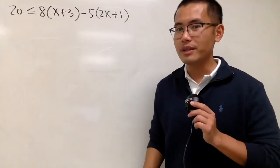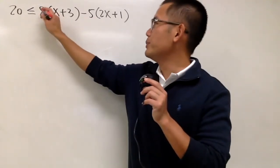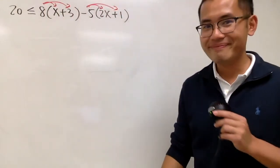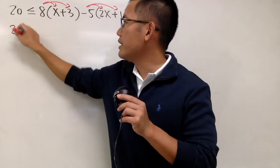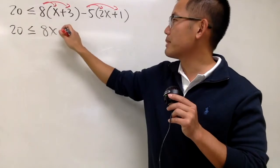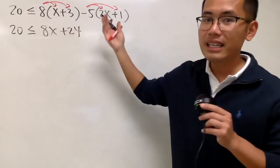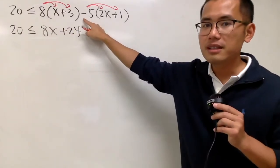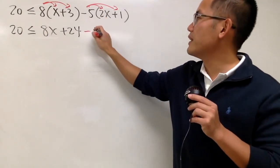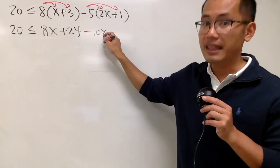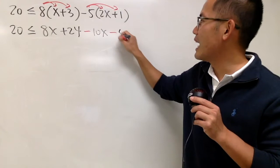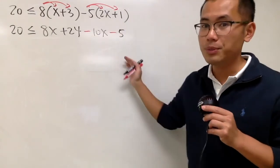To solve this inequality, we should first distribute the number in front of the parentheses. Here we have 20, and that's less than or equal to 8 times x, which is 8x, and 8 times 3 is plus 24. Be careful — this is negative 5. Negative 5 times 2x gives negative 10x, and negative 5 times positive 1 gives negative 5. So be careful how to distribute the negative as well.